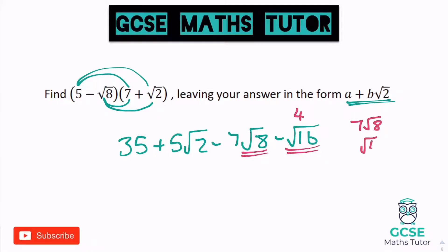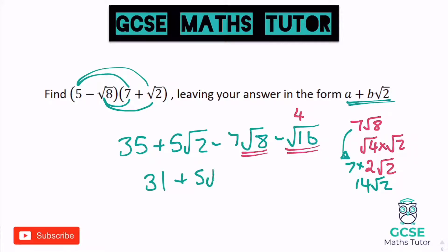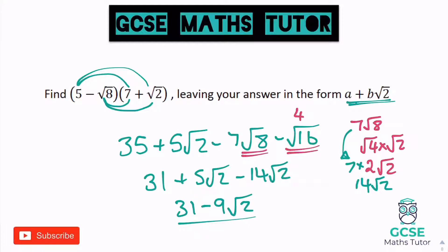I'm going to simplify 7 root 8 to the side. Root 8 is root 4 times root 2, which is 2 root 2. Remembering to bring that 7 back, because it was 7 lots of that — so 14 root 2. Swapping 7 root 8 for 14 root 2 and tidying up: 35 take away 4 at the start gives 31. Then we have plus 5 root 2, take away 14 root 2. Tidying up: positive 5 root 2 take away 14 root 2 — 5 take away 14 is negative 9 root 2.